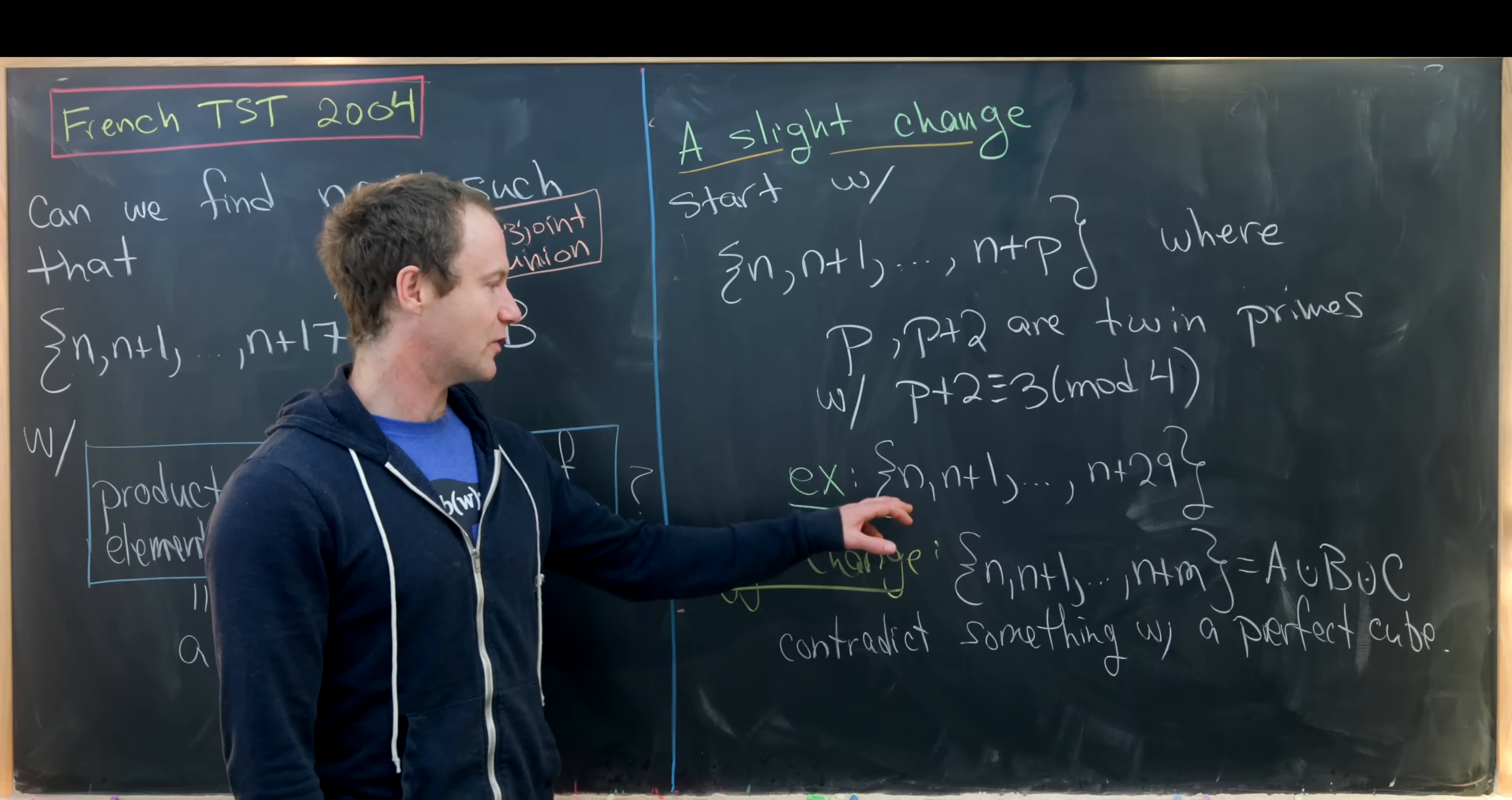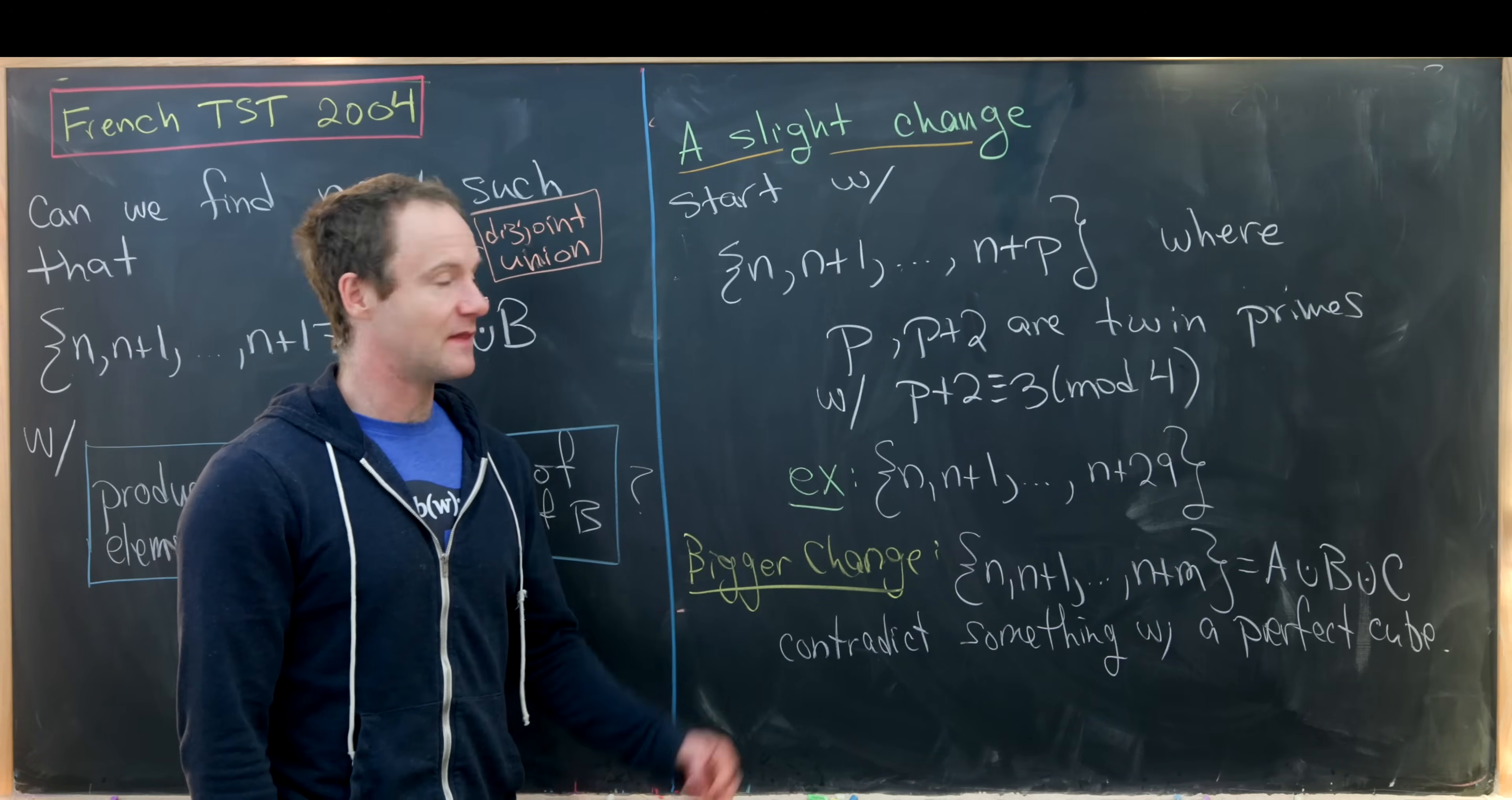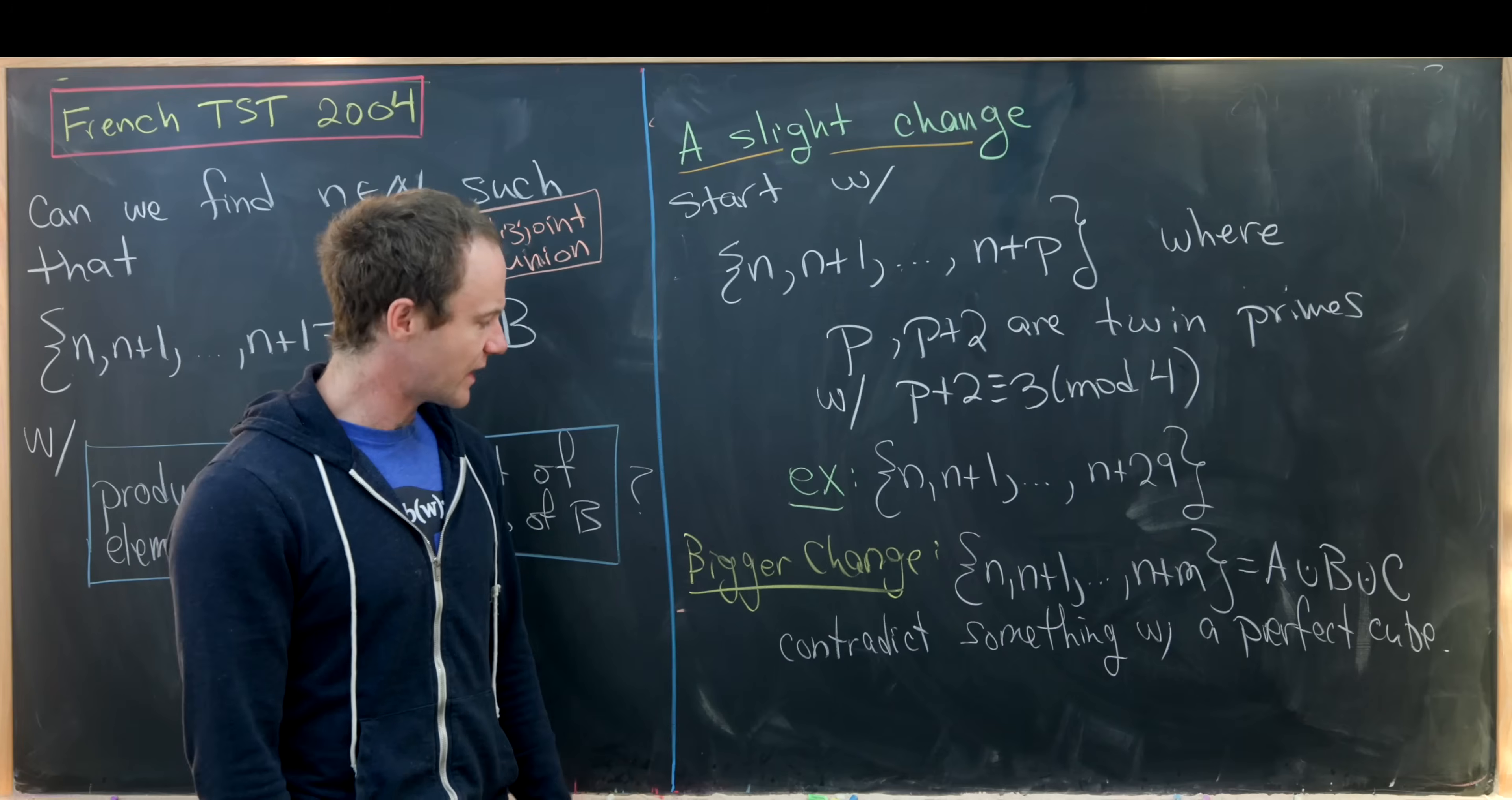As an example, we could have {n, n+1, n+2, all the way up to n+29}. That's because 29 is 1 mod 4, so 31, the next prime, is 3 mod 4.